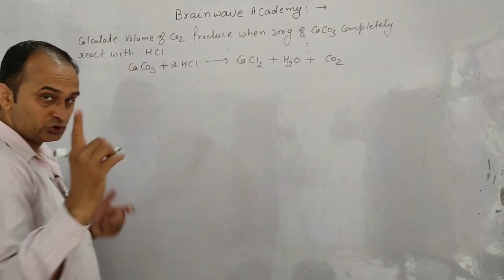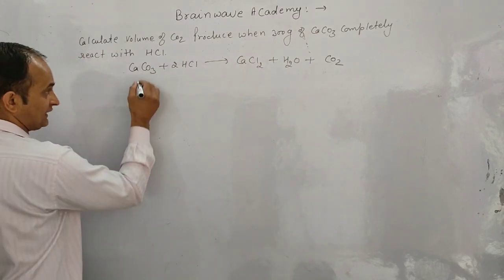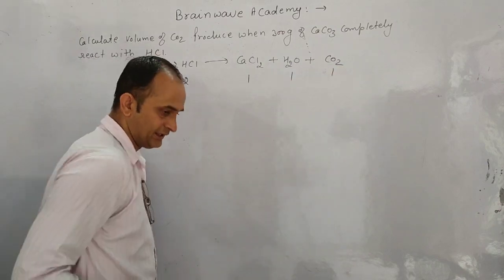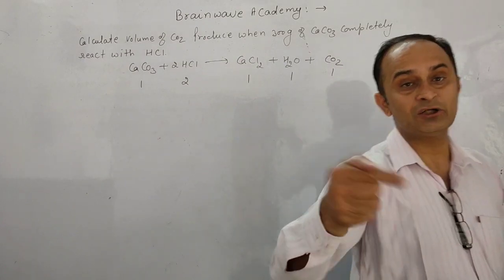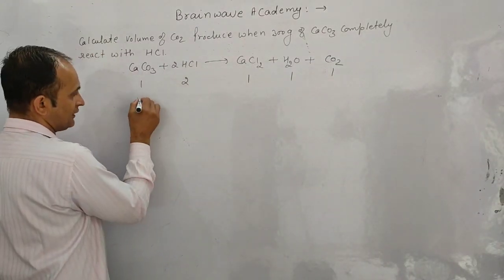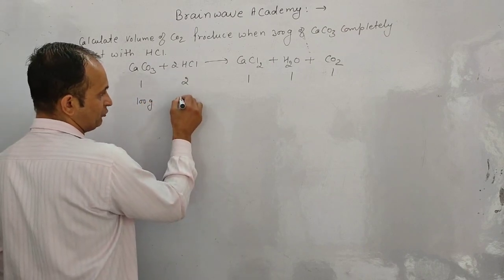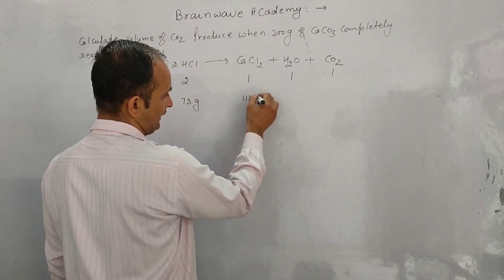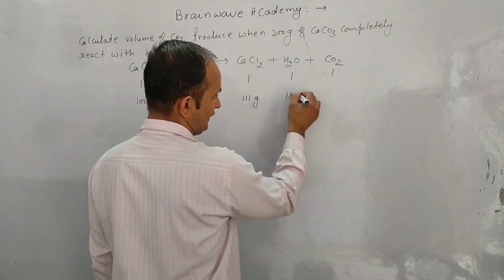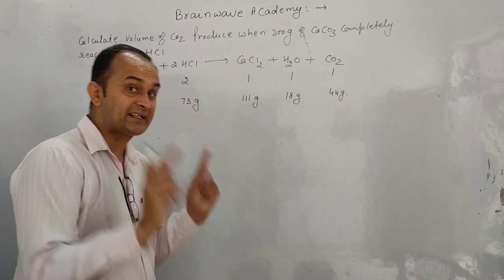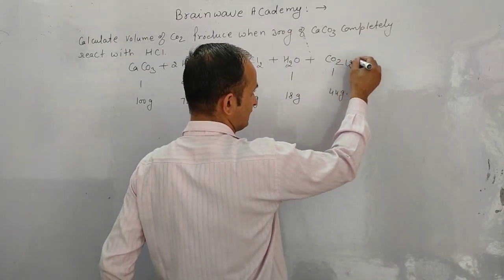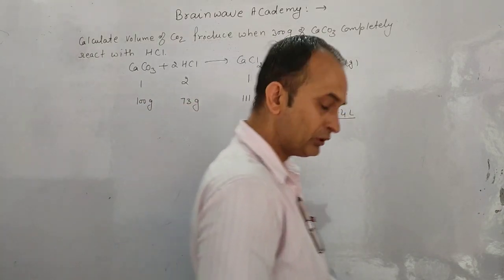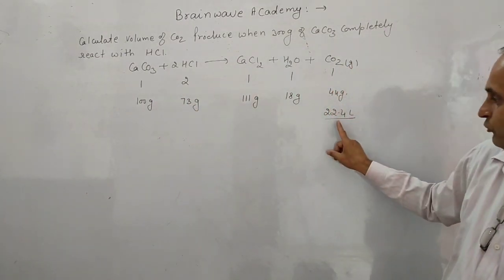Second step: stoichiometric coefficients — CaCO3: 1 mole; HCl: 2 moles; CaCl2: 1 mole; H2O: 1 mole; CO2: 1 mole. Third step: write masses and volumes. CaCO3 = 100 g; HCl = 73 g; CaCl2 = 111 g; H2O = 18 g; CO2 = 44 g. For volume, only gases: CO2 has a volume of 22.4 liters.